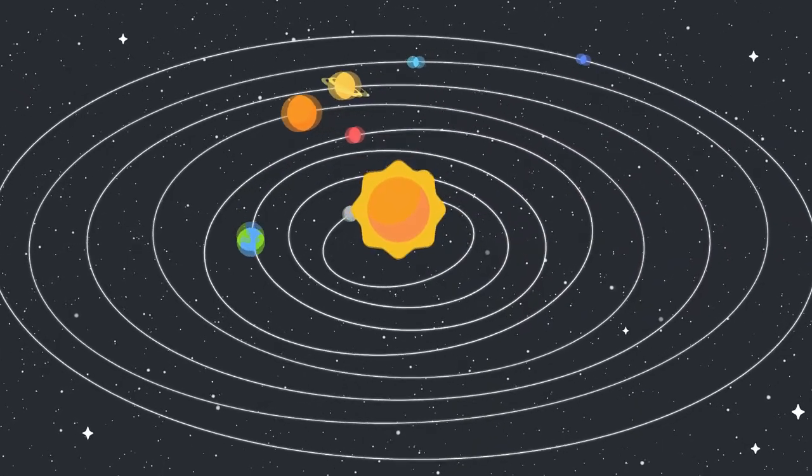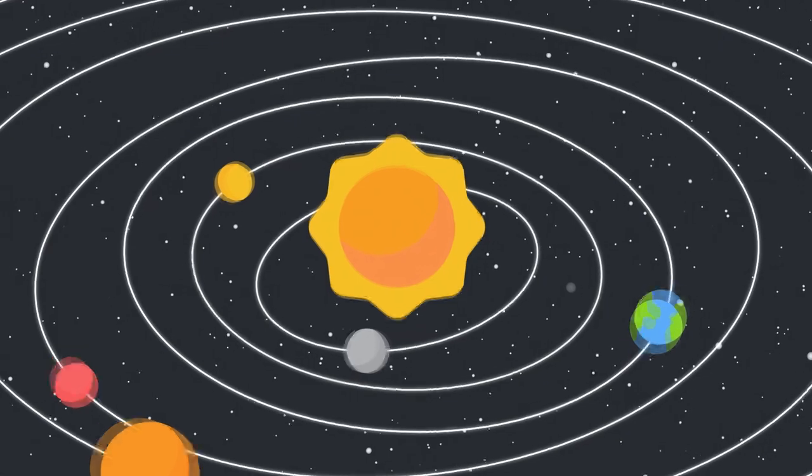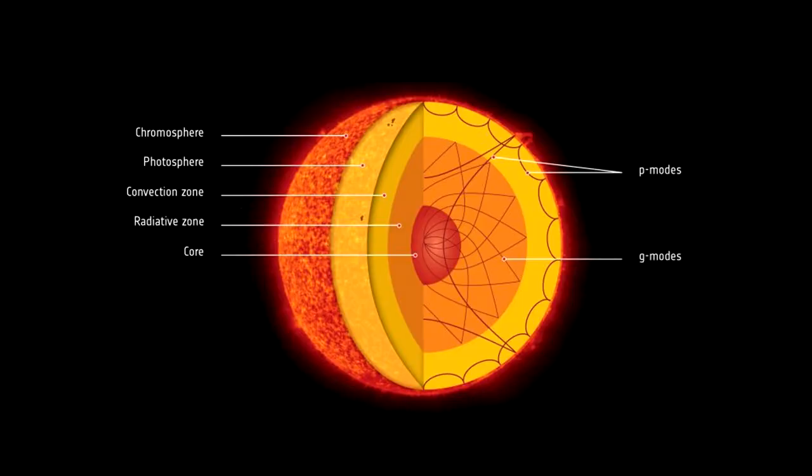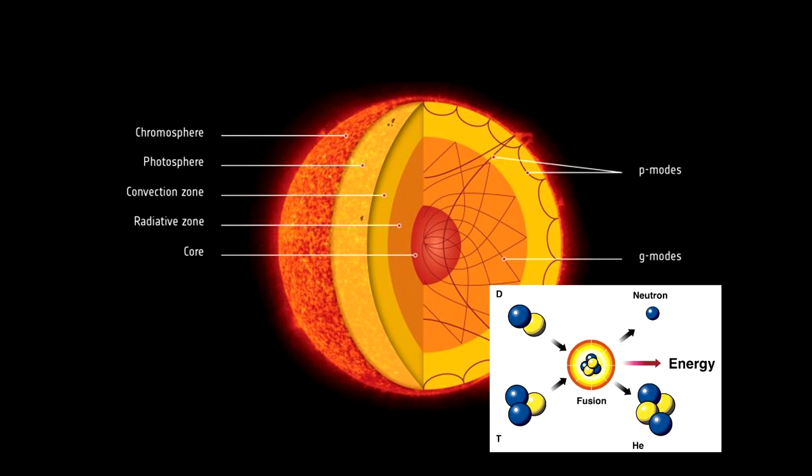Now, let's take a closer look at the structure of our sun. The sun is composed of several layers, each with its own unique properties and functions. At the core, temperatures reach about 15 million degrees Celsius. This is where nuclear fusion occurs, producing the energy that powers the sun.